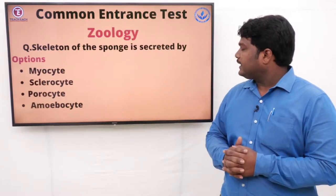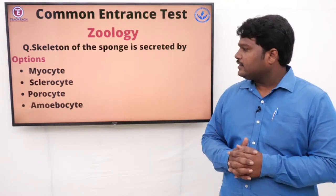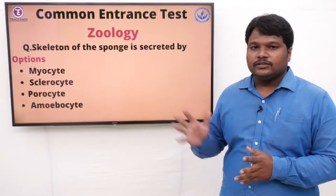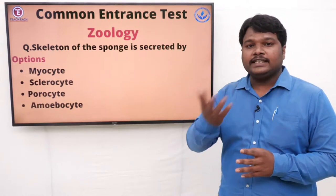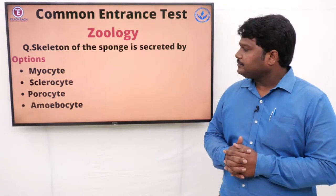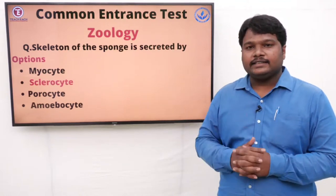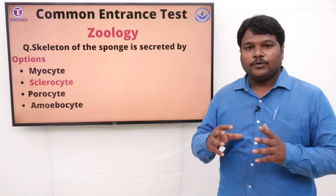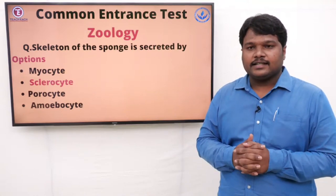Question 8: Skeleton of the sponge is secreted by. Options: A) Myocyte, B) Sclerocyte, C) Porocyte, D) Amoebocyte. The right option is sclerocyte. Sclerocyte is what sponges depend upon to produce their skeleton system.